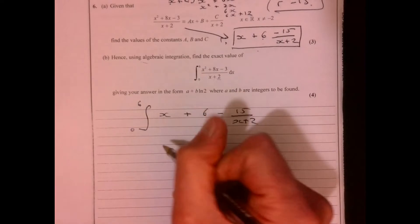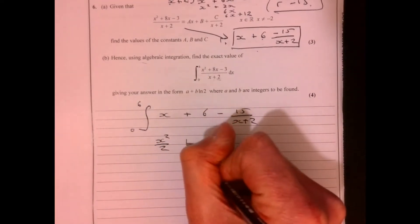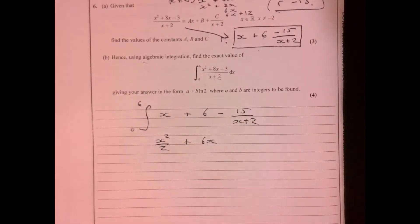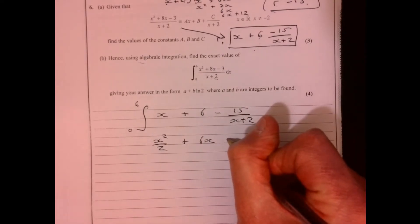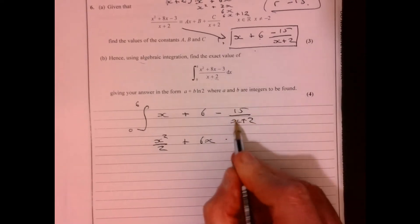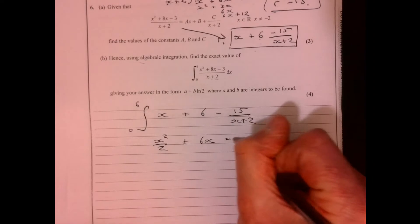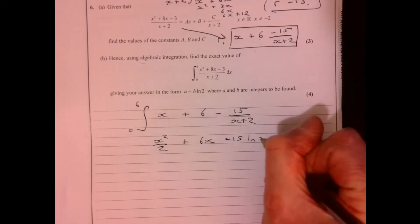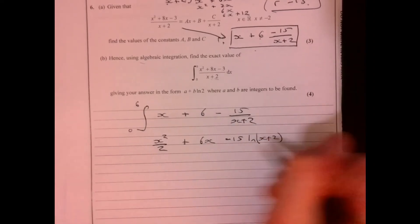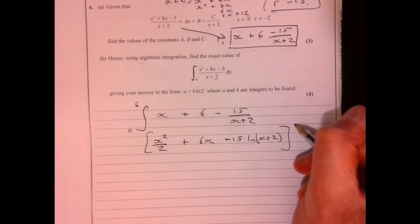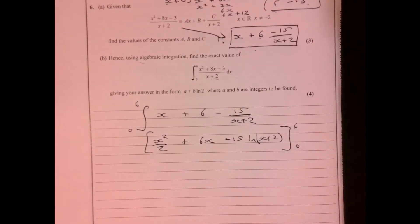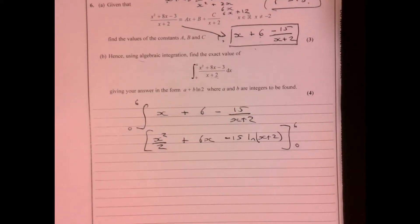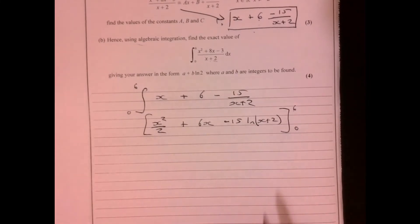What's that give us? That gives us x squared over 2 plus 6x, and then we're going to have, if we integrate this bit, it's going to give me minus 15 ln x plus 2, and that's still between 6 and 0. Now, I need to feed in those limits of 6 and 0, see what we end up with.